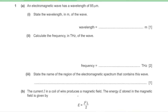Question number 1, Part A. An electromagnetic wave has a wavelength of 85 micrometers. State the wavelength in meters of the wave. To convert micrometers to meters, divide 85 by 10 to the power 6, which is equal to 8.5 × 10⁻⁵ meters.